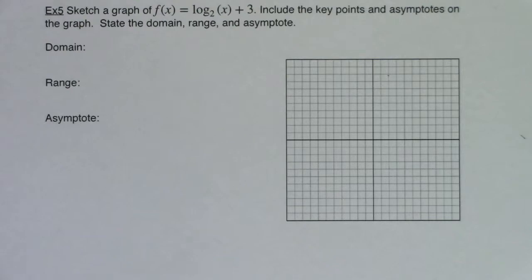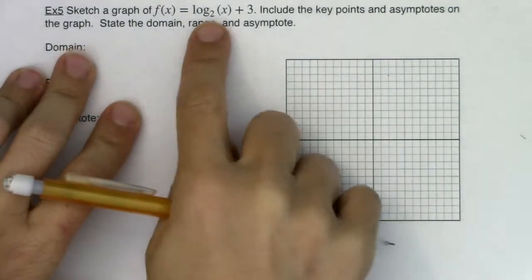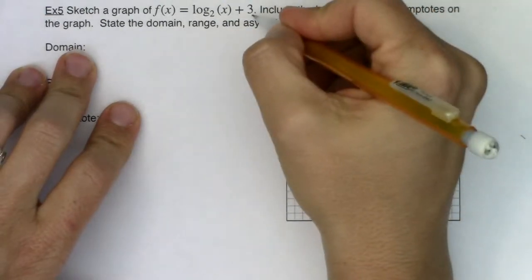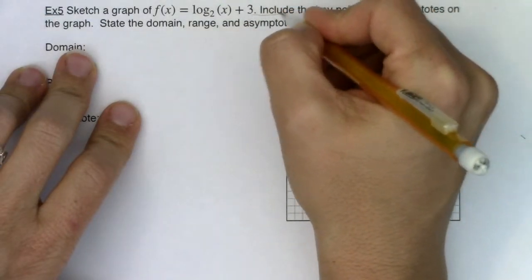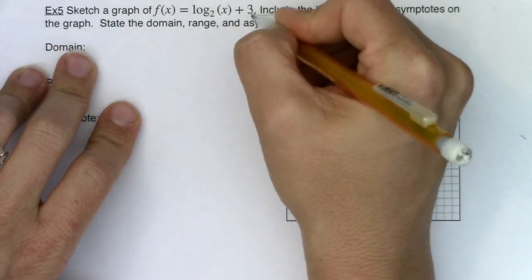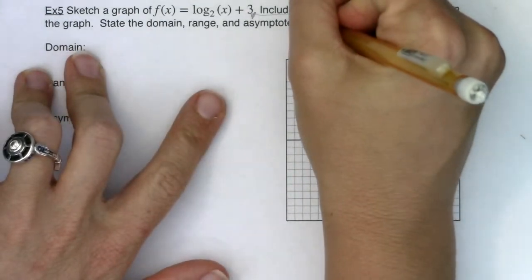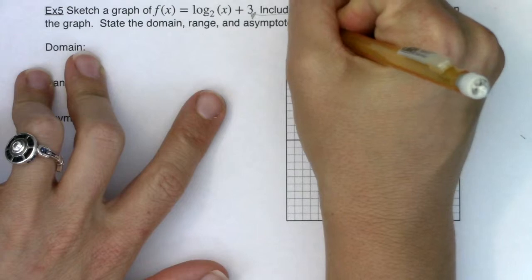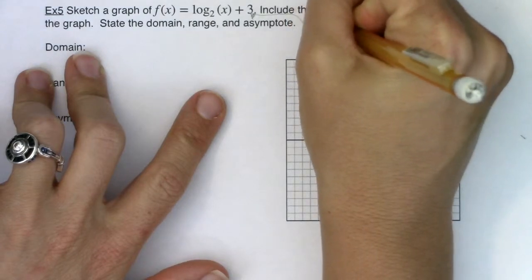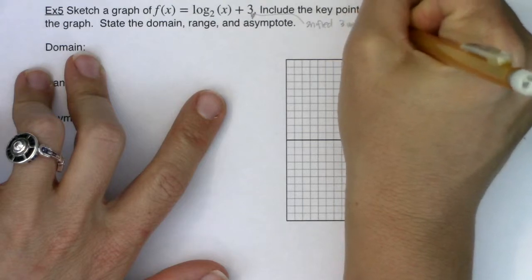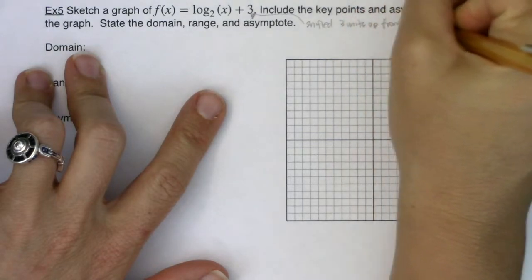Hey Mount 31, we're back at it with example 5. This time we're going to sketch the graph of log base 2 of x plus 3. The 3 is outside the grouping symbol, so this is going to shift our graph from example 3 up 3 units.